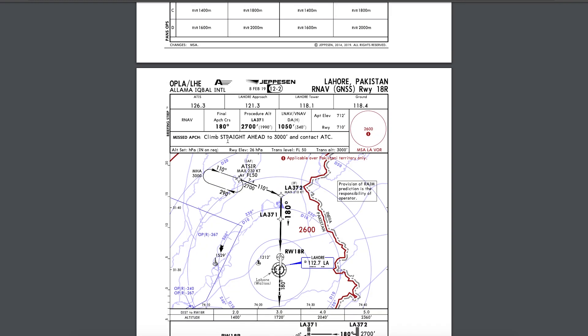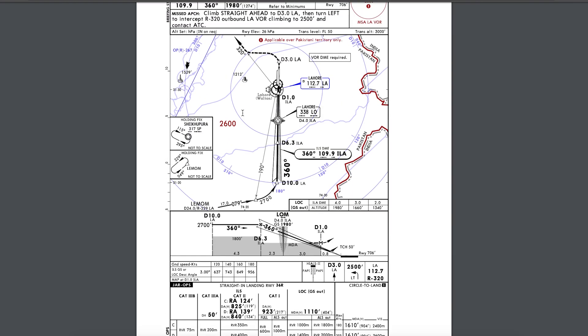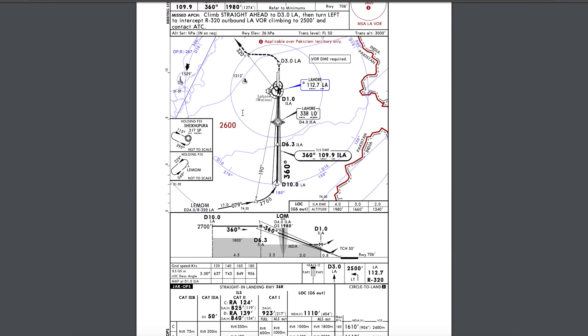Approach plates are basically followed by pilots to know how to land, in which system to land, where to land, and where the minimum descent altitude is. There are many details in approach plates. I hope you understood this — it is very informative and a bit confusing at first, but you will be able to understand soon. That covers my three videos in the sequence of understanding aviation charts and aerodrome charts.